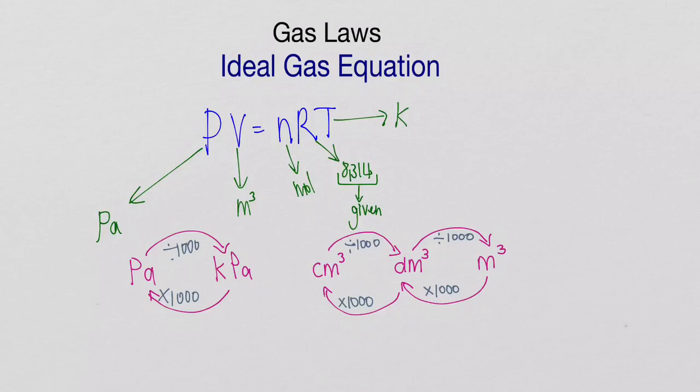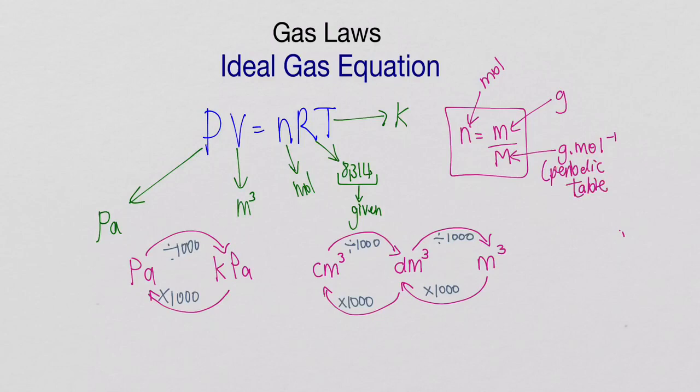And then I want to quickly recap that number of mole equation, which you should all remember. And it is on your information sheet. Number of moles is equal to mass over molecular mass. Remember that n is measured in mole, the m is a mass measured in grams, and there we've got our molecular mass in gram per mole. You can look this up on your periodic table. You use your mass numbers on your periodic table. So it's actually a given. You just need to go and look it up.